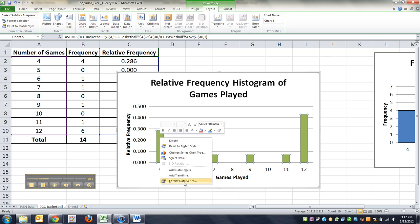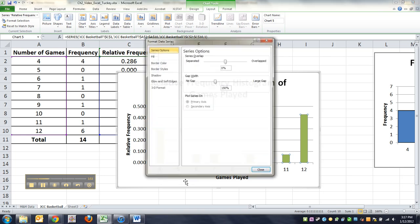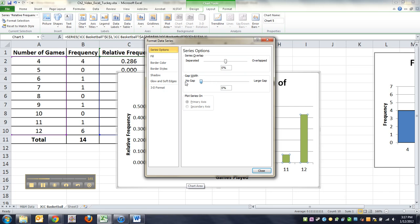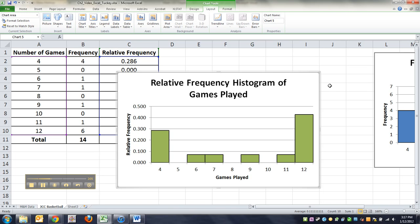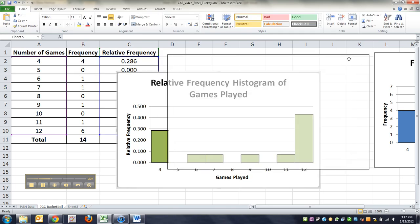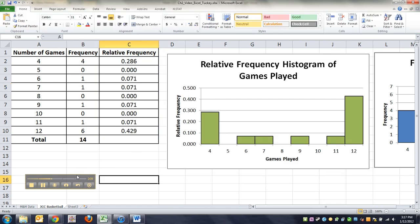And then right click again. Choose format data series this time. Change your gap to zero. Personally, I want a little bit of a border, so I'm going to add a solid line black border and I'm going to make it 1.25. And there we go. Now I've seen it twice, so hopefully you'll be better at it.